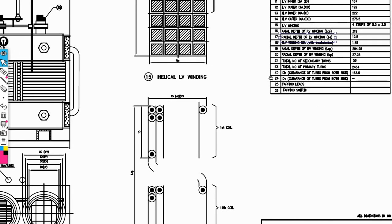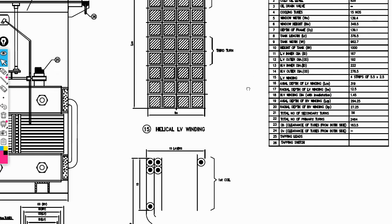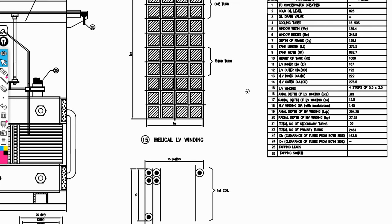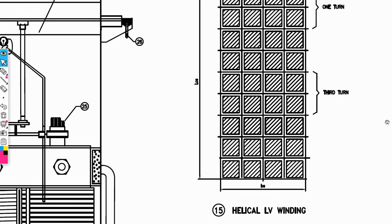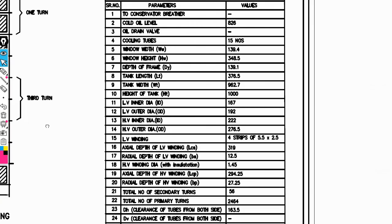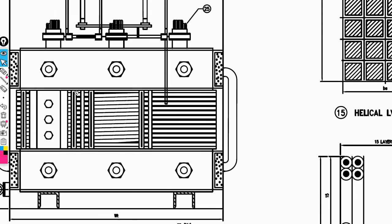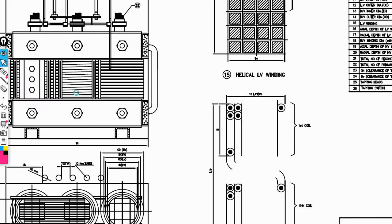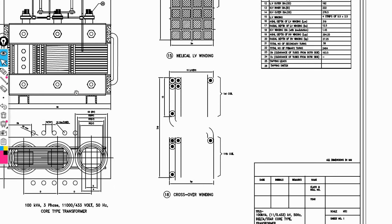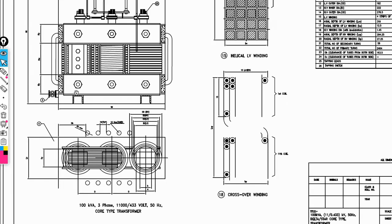Next, we need the width of the transformer — that is, window width — and the height of the transformer — that is, window height. The symbols are shown here: width of window (Ww) and height of window (Hw), labeled as parameters 5 and 6.